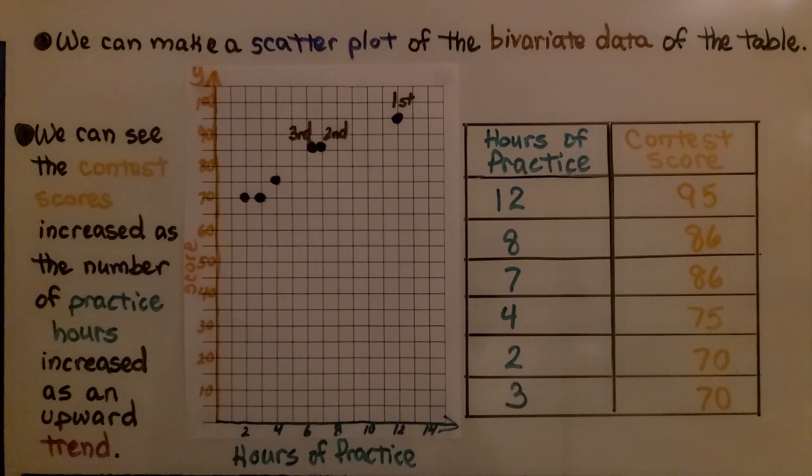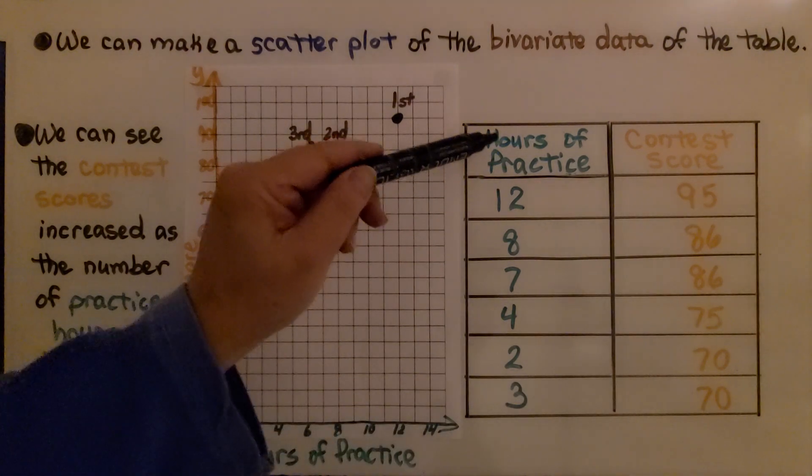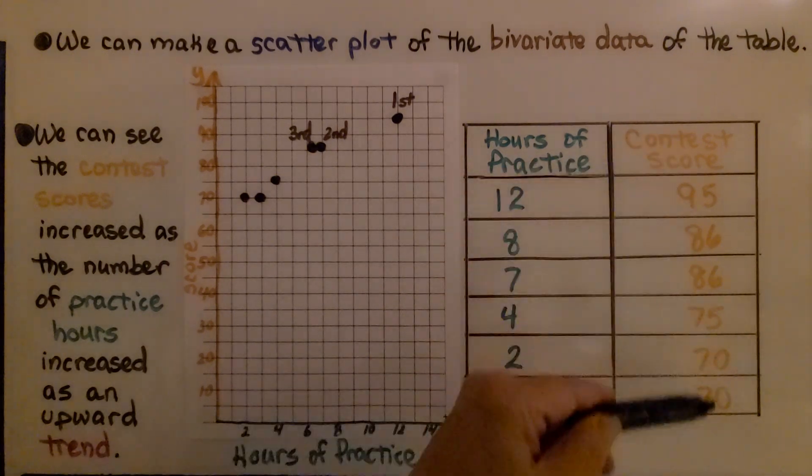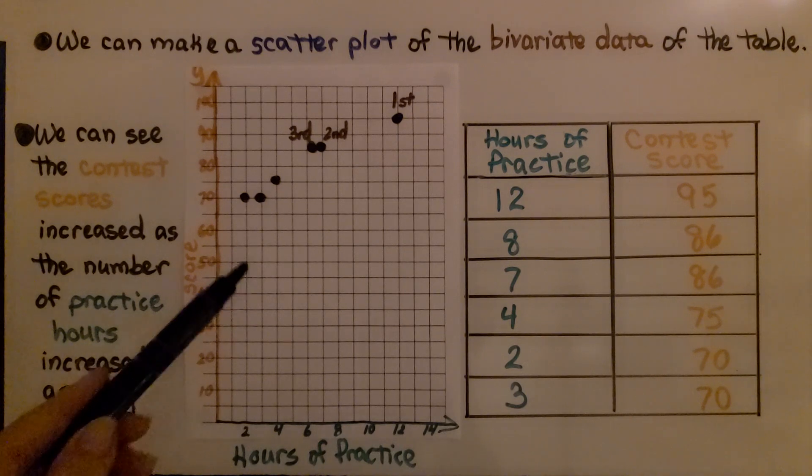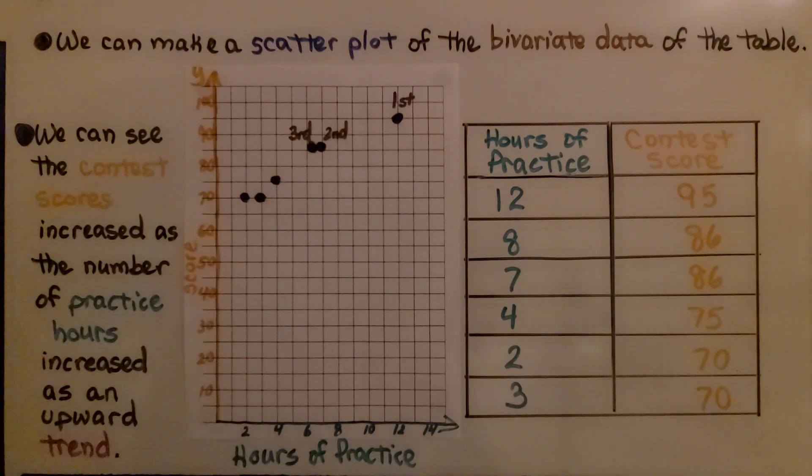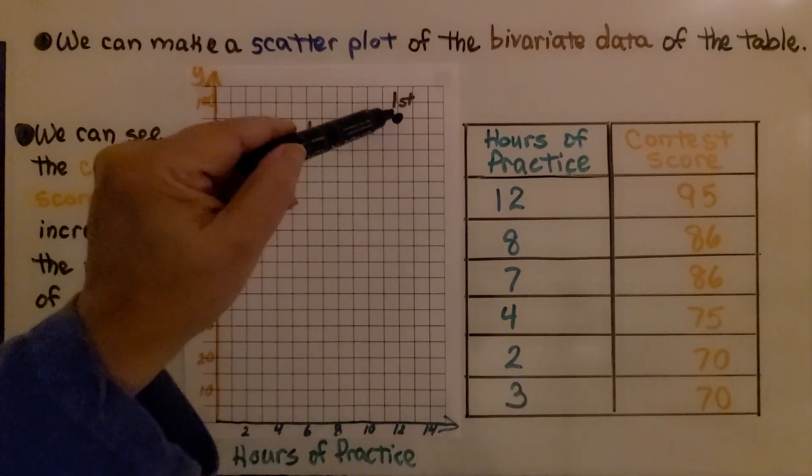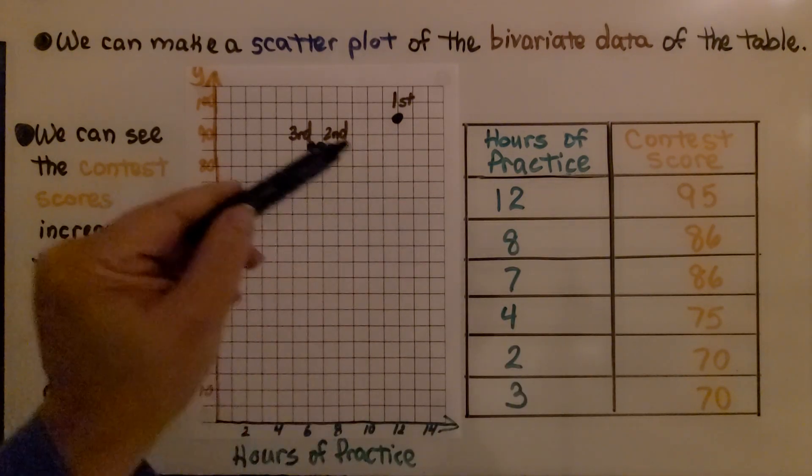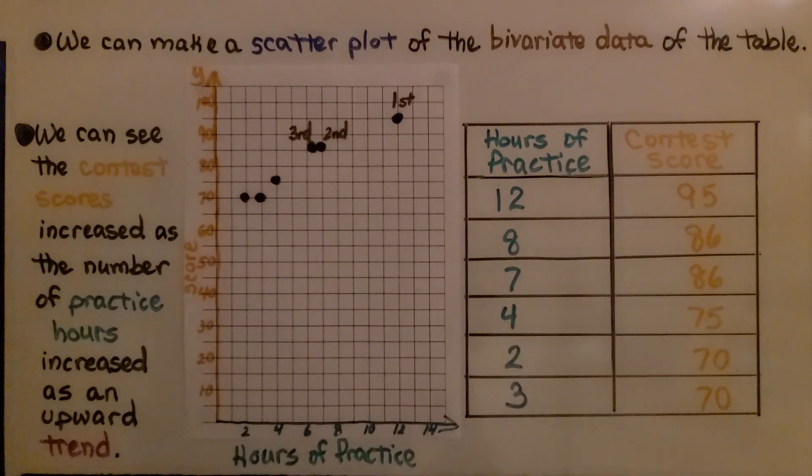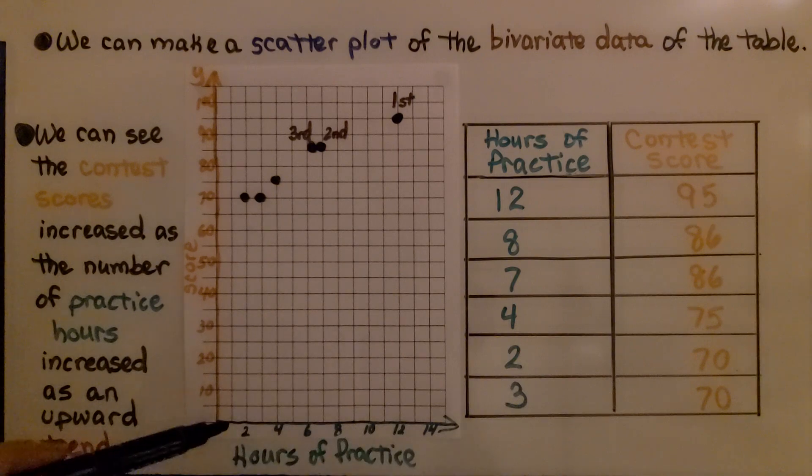We can make a scatter plot of the bivariate data of the table. The table is showing the hours of practice and the score that was earned in a contest. We can see the contest scores increased as the number of practice hours increased as an upward trend. Twelve hours of practice got first place, the highest score. Eight hours of practice got second place, the next highest score. The least amount of hours of practice got the lowest score.